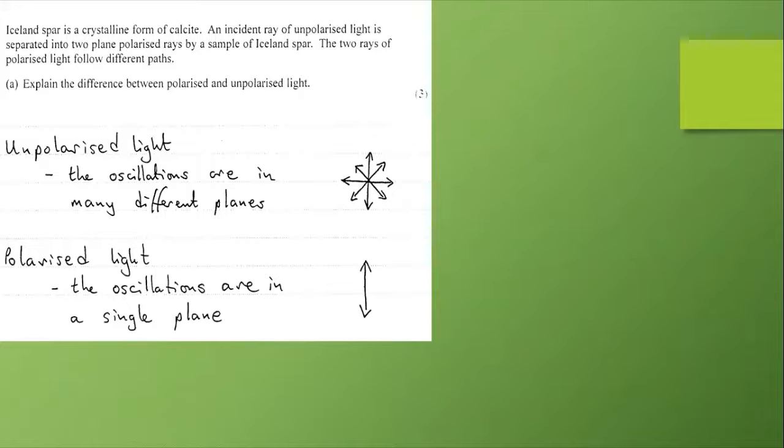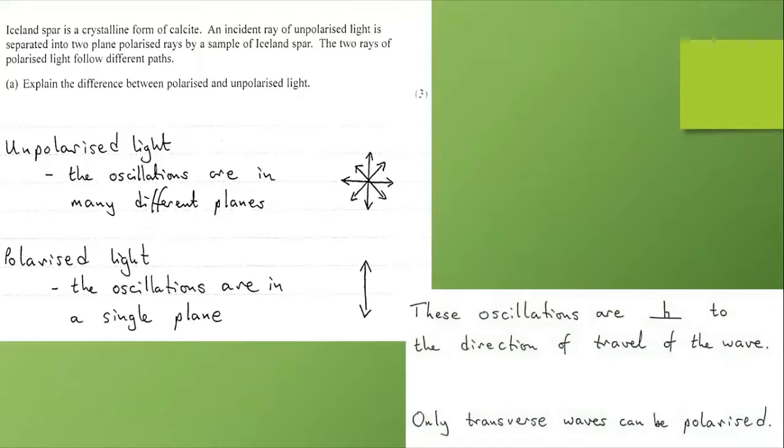Now here's an exam question. Iceland spar is a crystalline form of calcite. An incident ray of unpolarized light is separated into two plane polarized rays by a sample of Iceland spar. The two rays follow different paths. We're asked to explain the difference between polarized and unpolarized light. Here we see my use of those two different diagrams. You need to be able to say something like this and use these diagrams. I'm also adding that these oscillations are at right angles to the direction of travel of the wave or the direction in which the wave is carrying energy.